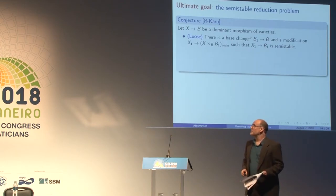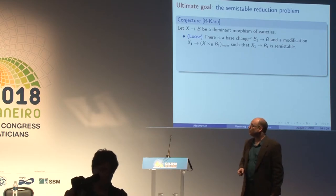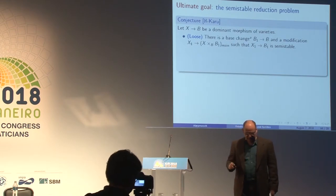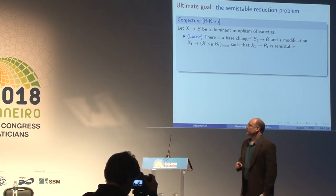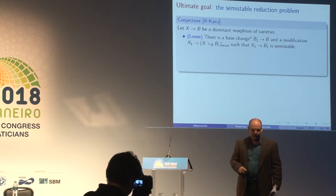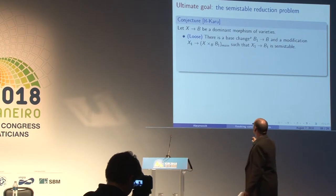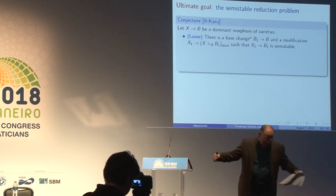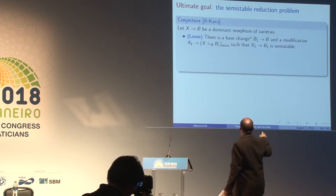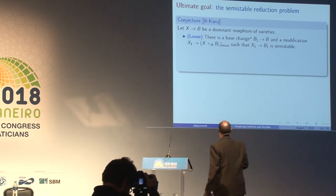The ultimate goal is to solve the semi-stable reduction problem. The conjecture that Karu and I made is that if X to B is a dominant morphism of varieties, then there is a base change — an alteration, a proper surjective and generically finite morphism B₁ to B — and a modification of the pullback such that the new mapping is a semi-stable family.